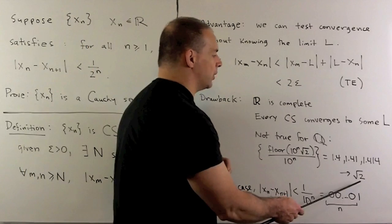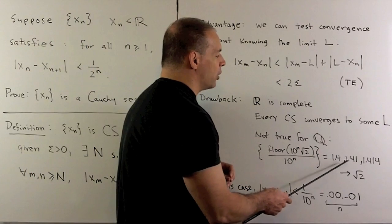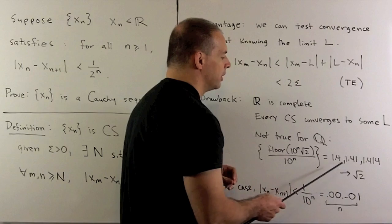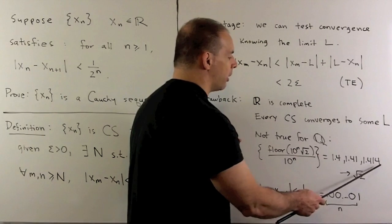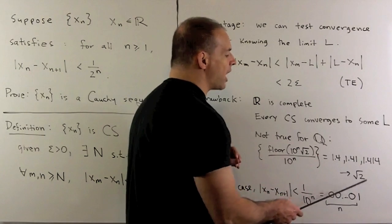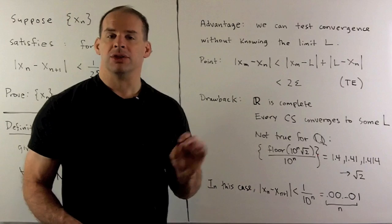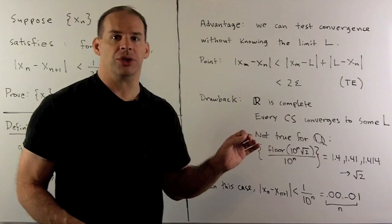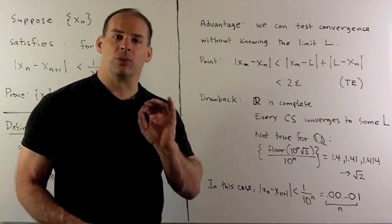For instance, if we take square root of two, I'm just going to keep adding on extra decimal places. That's going to give me a sequence of rational numbers that converges to the irrational number √2. So this sequence doesn't converge in the rationals. It does converge in the real numbers, though.